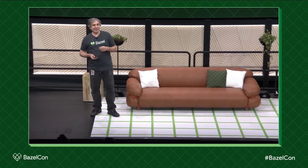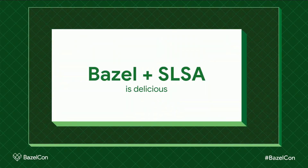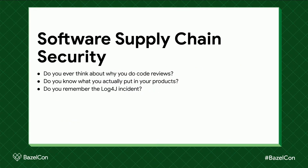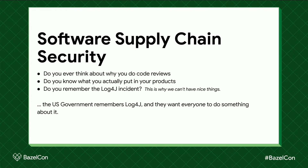Bazel and SALSA together is delicious. We're at the SALSA level one, having a provable build. So what's supply chain security about? You do code reviews, right? You want to protect against insider attacks or accepting malicious third-party code that seems harmless. But do you actually know what goes inside your products, what you ship to people, what you use to build them? You all remember the log4j incident — and even if you don't, the US government remembers it. That's why we can't have nice things now, and they want everyone to do something about it. There are 10 of you in the room who really care about this talk, but the SVPs of every company you work for really care about the results here today, because it's going to allow them to continue to sell to the government.